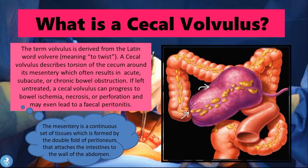So what is a cecal volvulus? The term volvulus is derived from the Latin word volvere, meaning to twist. A cecal volvulus describes the torsion of the cecum around its mesentery, which often results in acute, subacute, or chronic bowel obstruction. If left untreated, a cecal volvulus can progress to bowel ischemia, necrosis, or perforation, and may even lead to a fecal peritonitis.